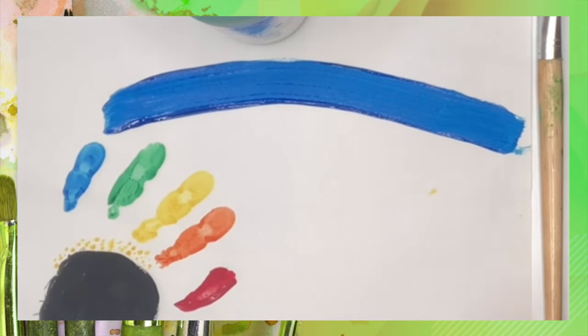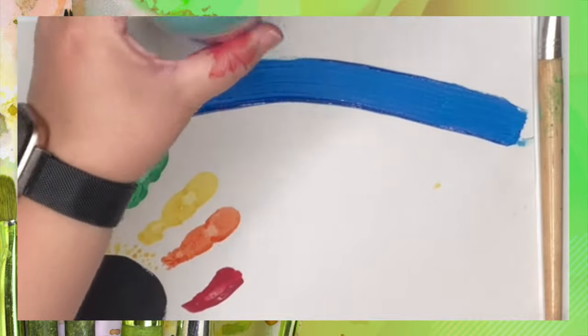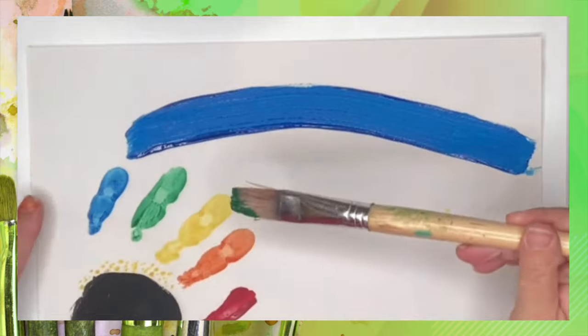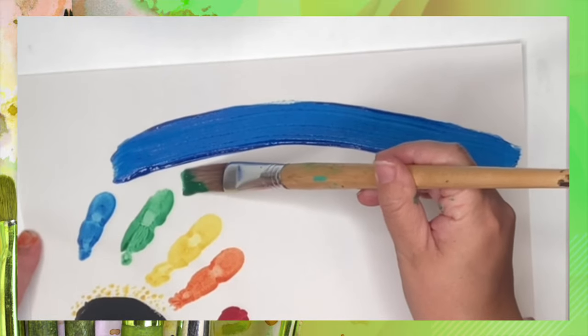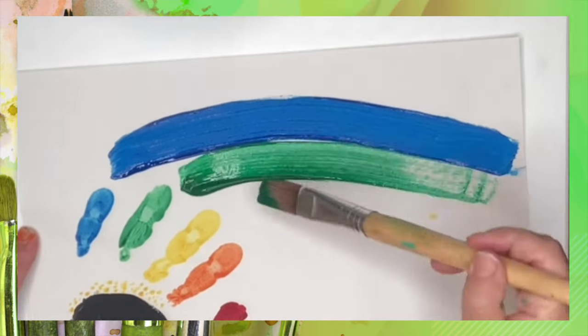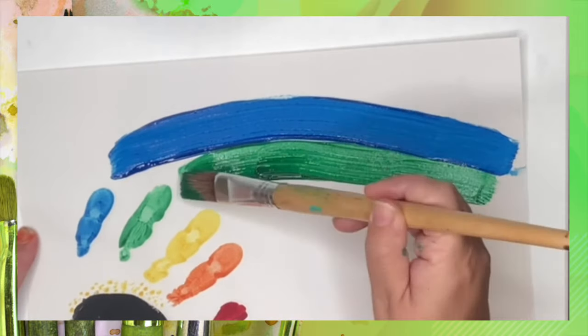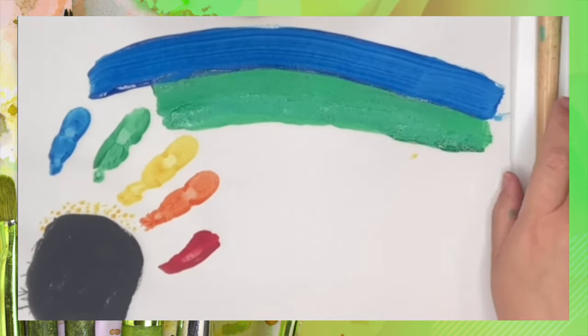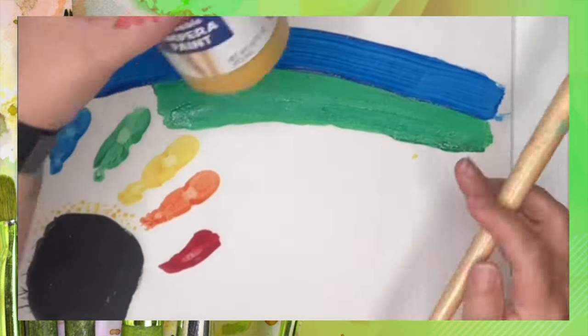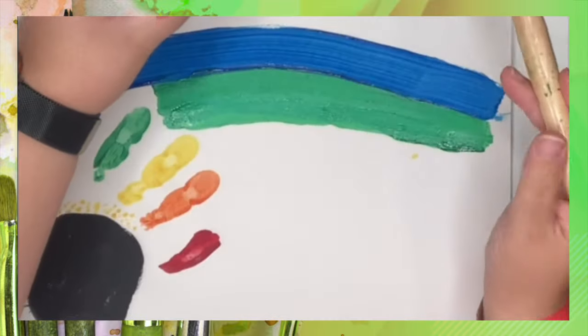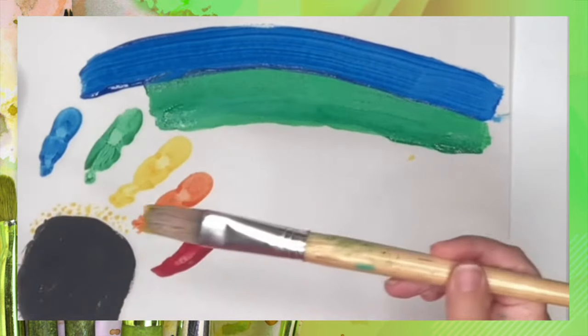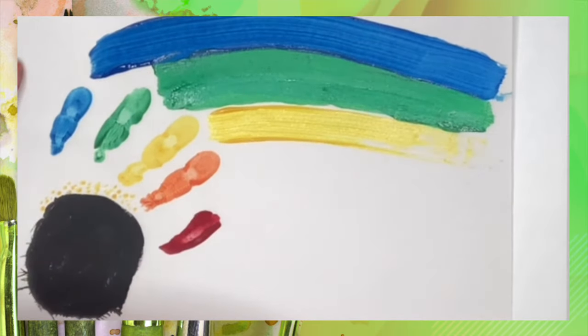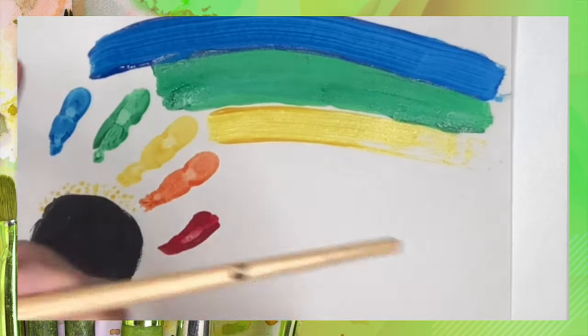So next for the rainbow we grab our green paint and the paintbrush and we are going to paint the green part of the rainbow. So now onto the yellow part for the rainbow. Just like this. And remember your lines can be as big as you want them.